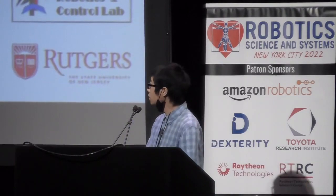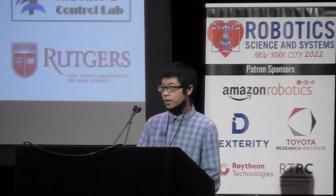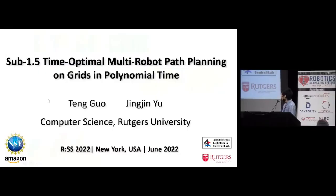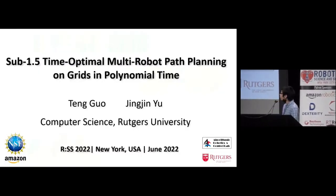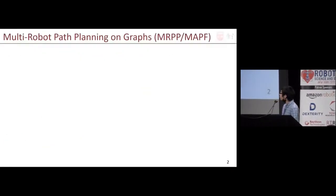Hi everyone. My name is Teng Kuo. I am a PhD student from Rutgers University. Today I will be presenting our joint work with my advisor Professor Jingjin Yu. We focus on multi-robot path planning on graphs.